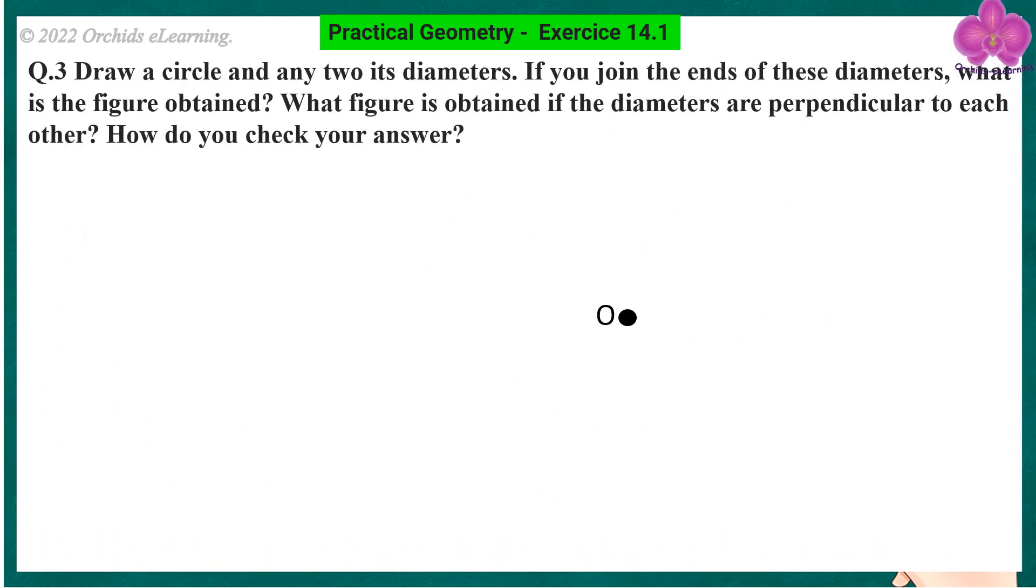Draw a circle and any two of its diameters. If you join the ends of these diameters, what is the figure obtained? What figure is obtained if the diameters are perpendicular to each other? How do you check your answer?